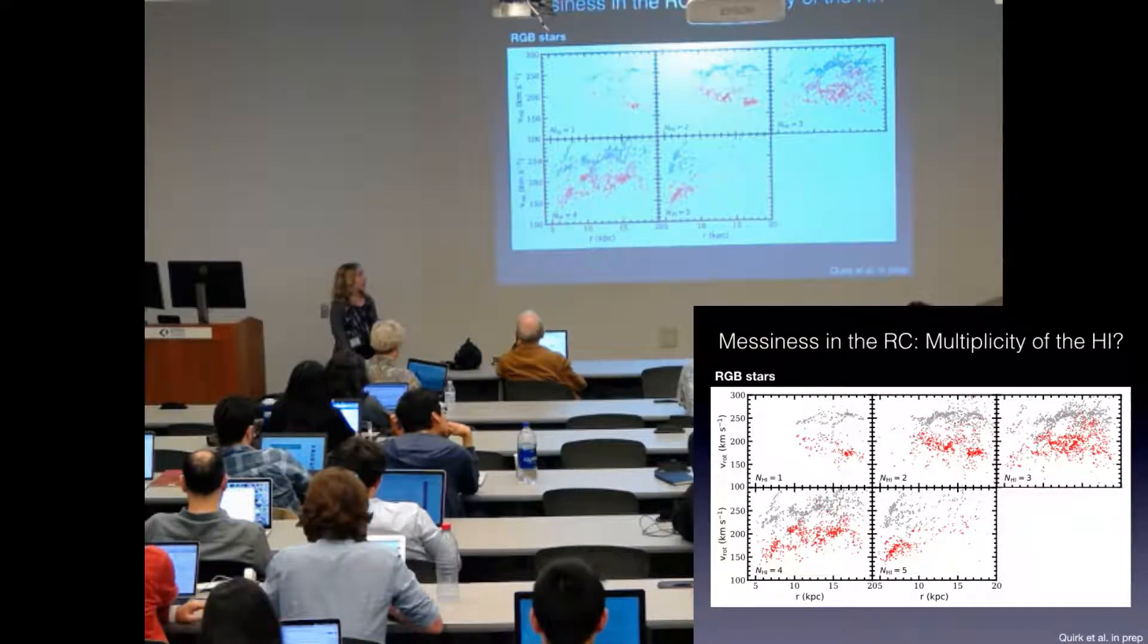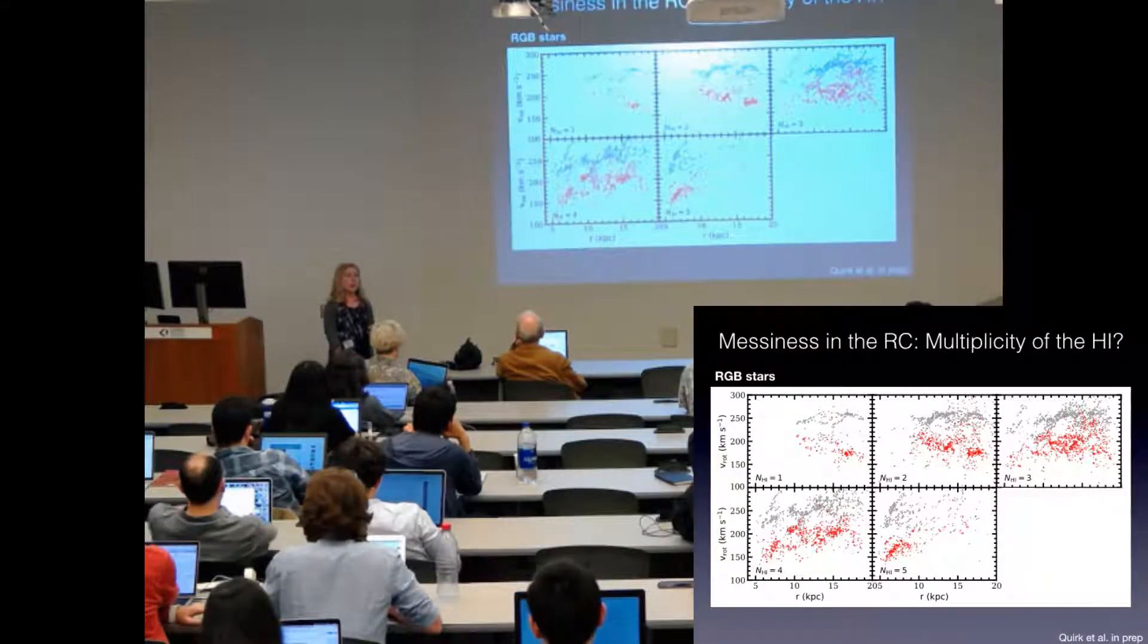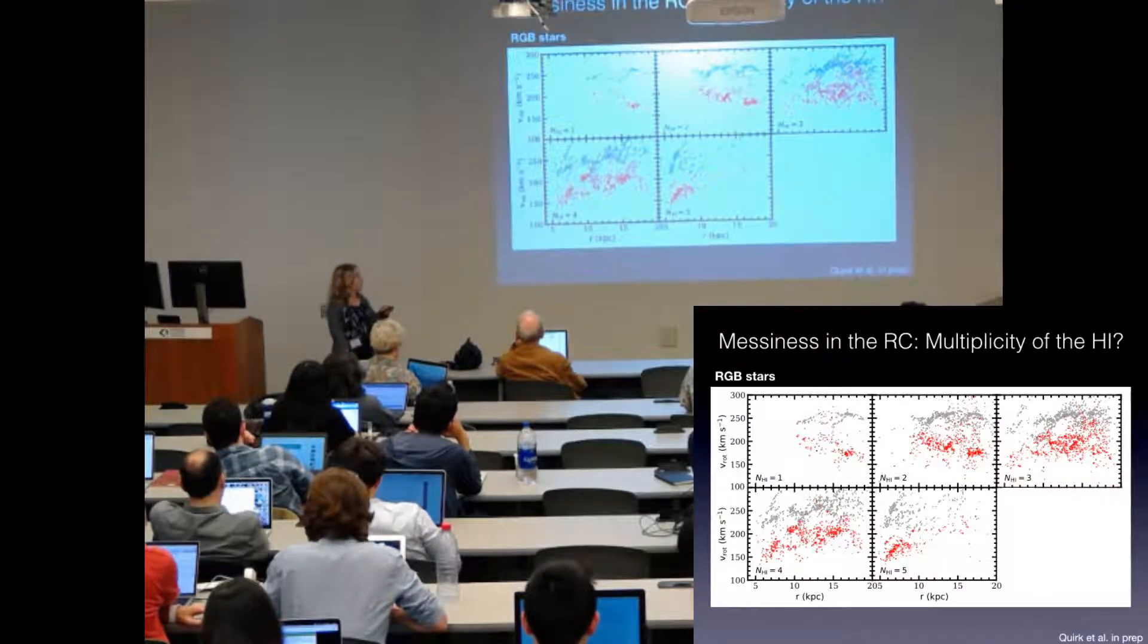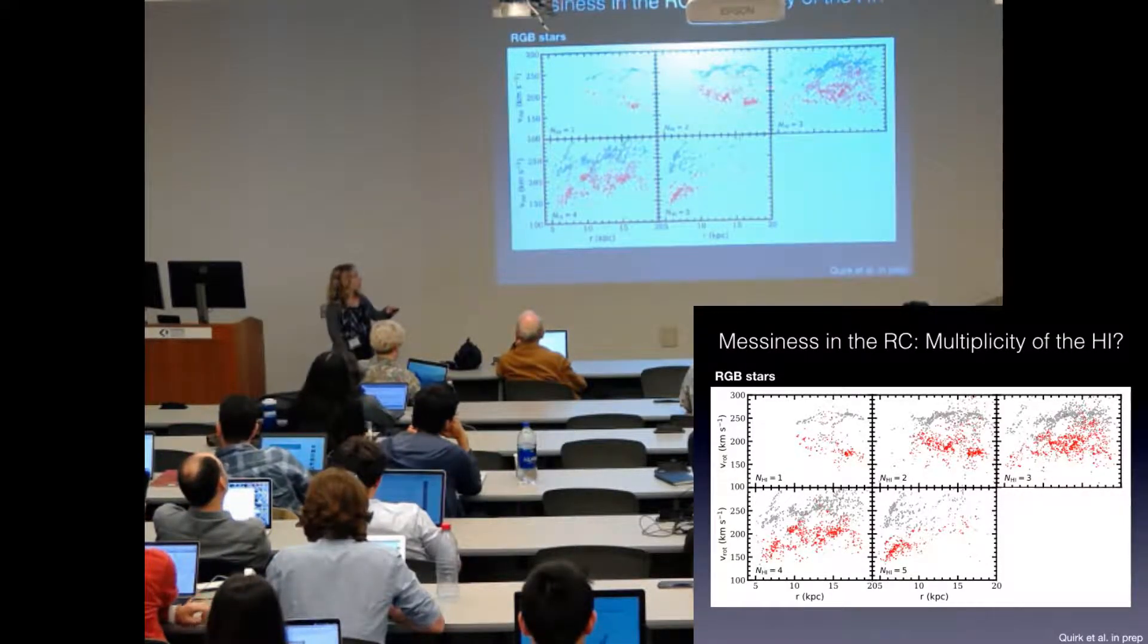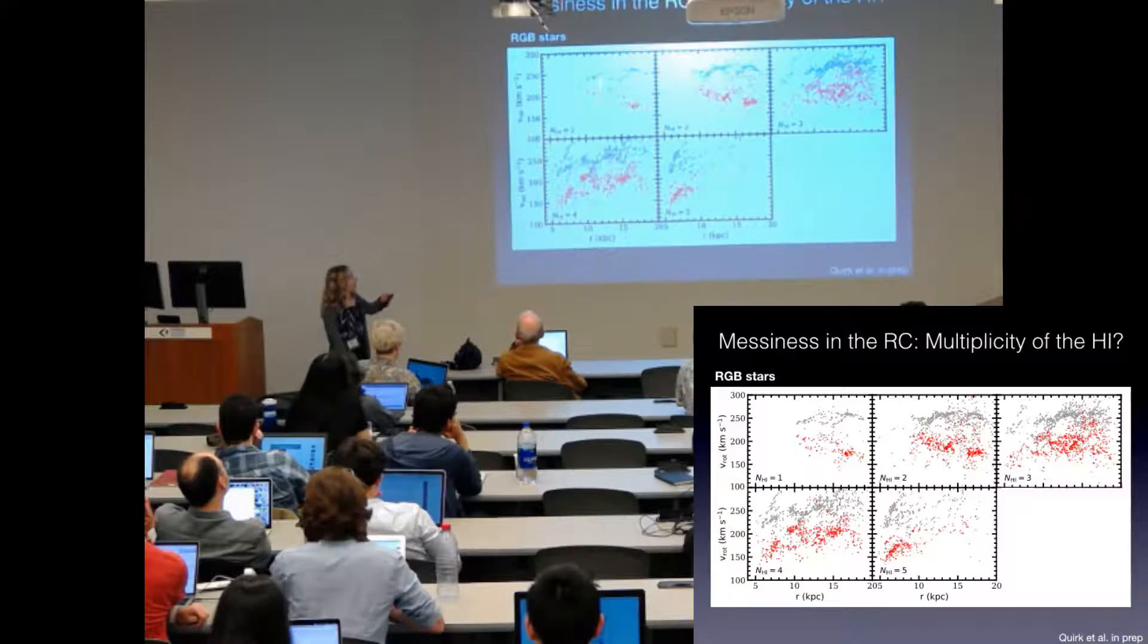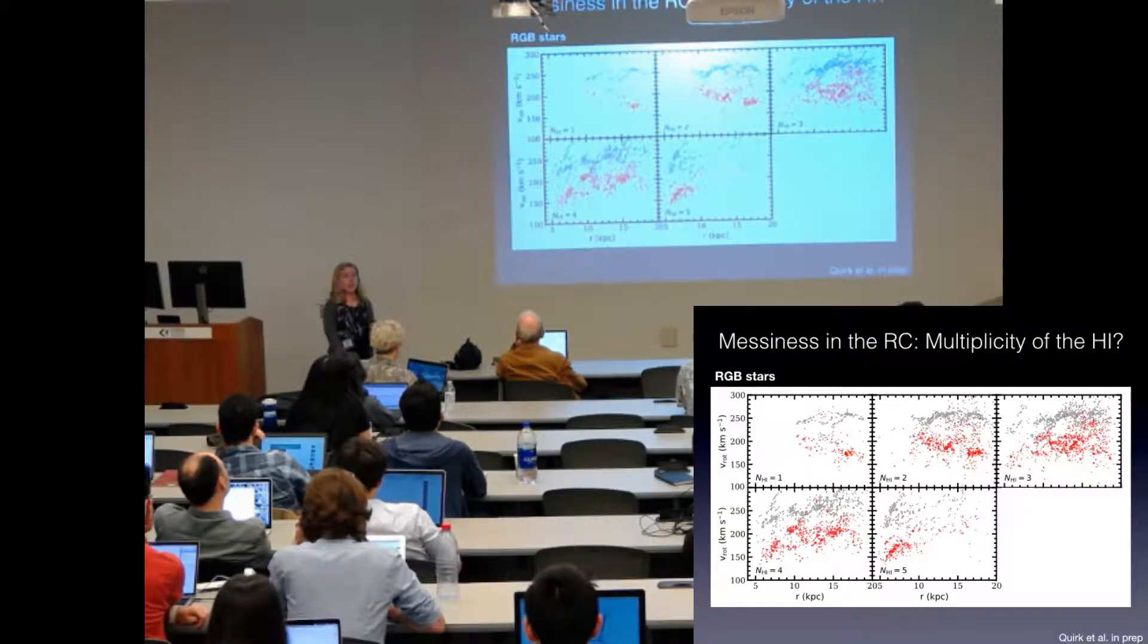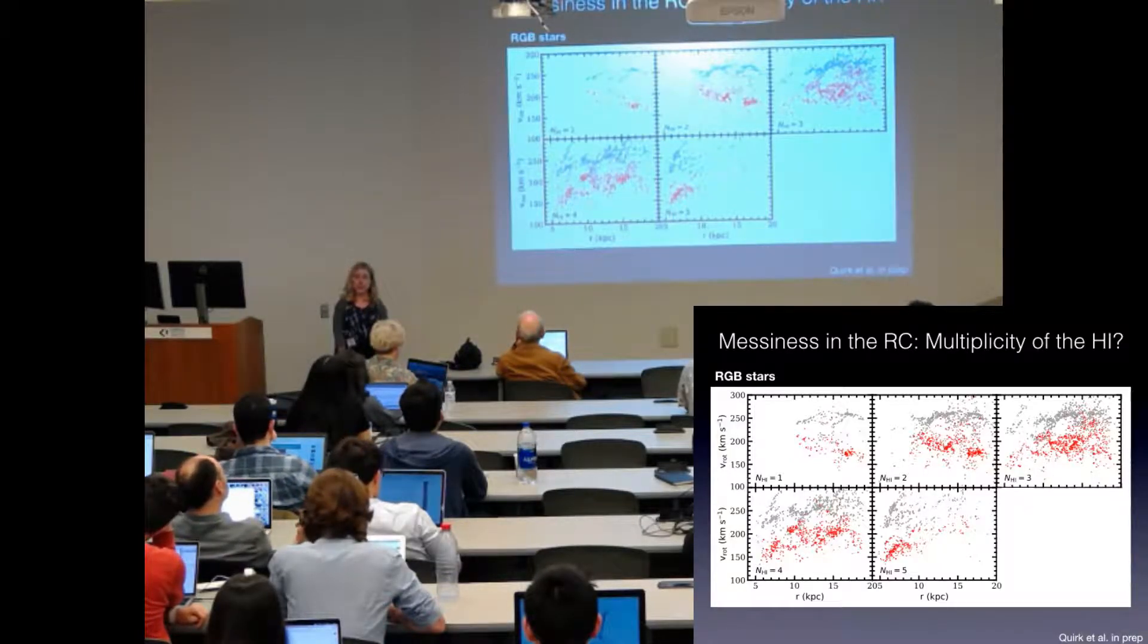Similarly, I've divided a rotation curve for the RGB population into line of sight complexity, with the first panel here being the least complex line of sight, and then it continues to the most complex line of sight at n equals five. You can see that there is a clear lack of simple or not complex line of sights in the inner region of M31. And the most complex line of sights definitely favor this region. So there is definitely a complex geometry going on in the inner region of M31.